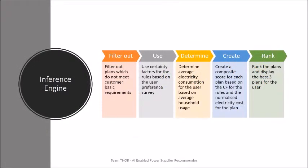The engine first filters out the plans which do not meet specific requirements. The rules are then fired using all the certainty factors. A normalized score is developed for the estimated cost of the user for each plan. These two are then combined to provide a score for each plan before ranking.